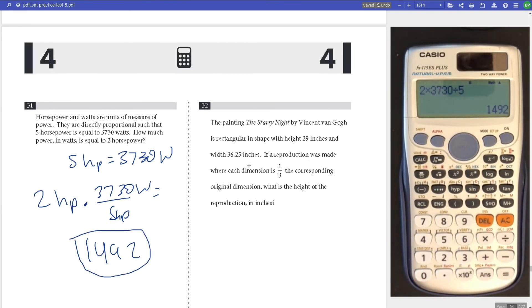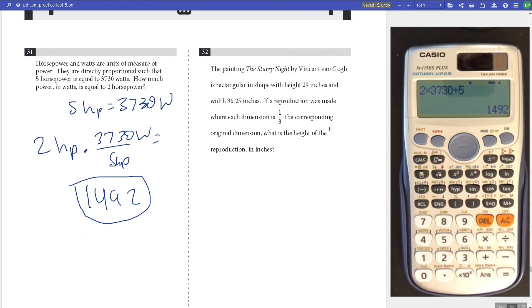Number 32, we have the painting Starry Night. Its height is 29 and its width is 36.25. What is the height of a reproduction? We're looking at the height, one third. We do one third times 29, answer is 29 over 3. Just bubble that in.